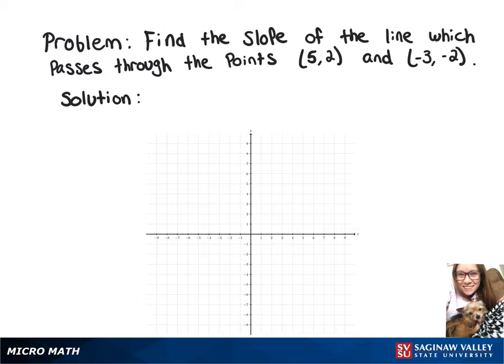To find the slope of the line that passes through (5, 2) and (-3, -2), we're going to do (-2 - 2) over (-3 - 5). And that gives us -4 over -8, or if we simplify that, just 1/2.